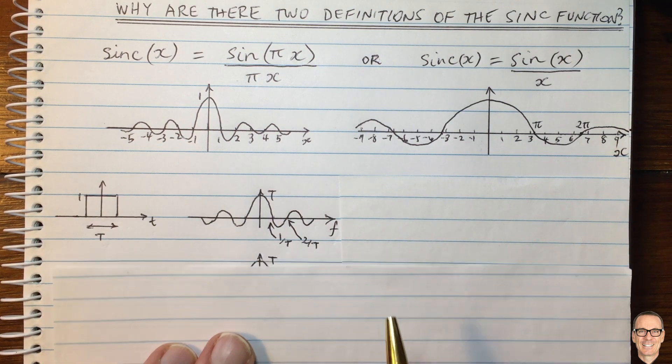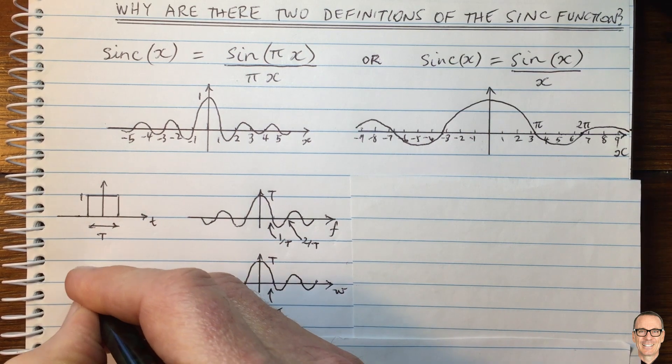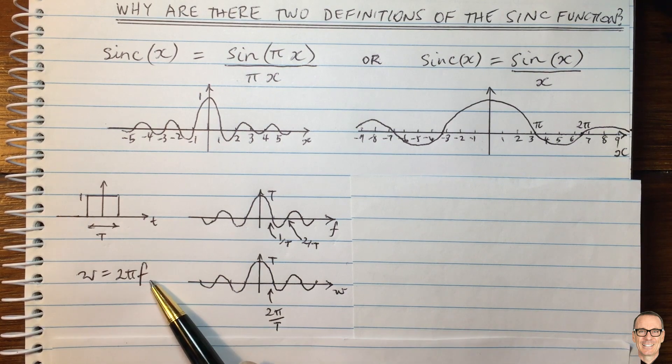What if we plot it with respect to the radial frequency? And of course, radial frequency, omega, equals 2pi f. So you can see there's a scaling.